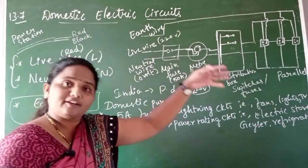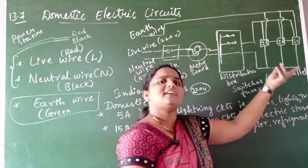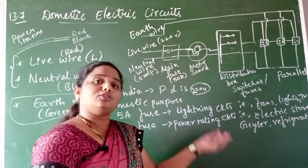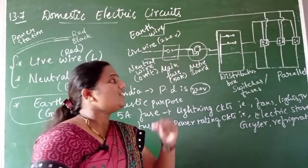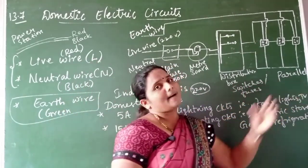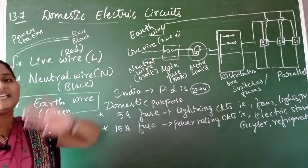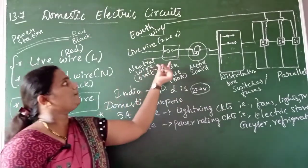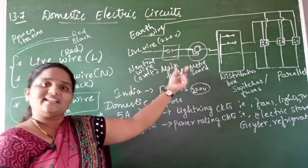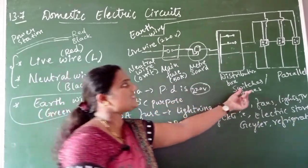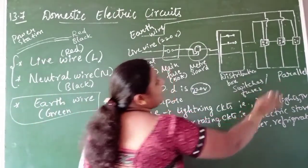Another advantage of using a parallel combination is that the same voltage is available at different rooms. Different electronic components across different rooms should get the same voltage, and this can only be achieved by using a parallel combination. The fuse wire, however, is made in series with the electrical circuit, whereas different electrical components across different rooms are made in parallel connection.